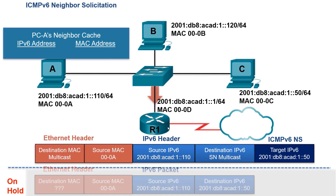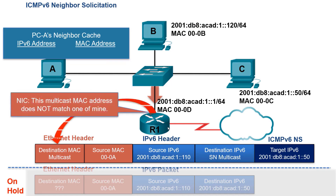Router R1 receives the frame on its LAN interface. A similar process occurs on R1's interface — the Ethernet NIC ignores the frame because the destination multicast MAC address does not map to any of its IPv6 addresses. Furthermore, ICMPv6 Neighbor Solicitation Messages are not forwarded by the router, because the Solicited Node multicast address in the IPv6 header is sent with Link-Local scope, which tells the router not to forward these packets off the local link or network.